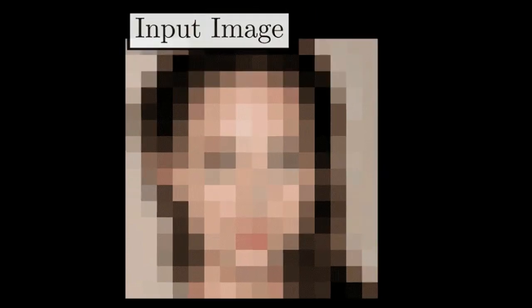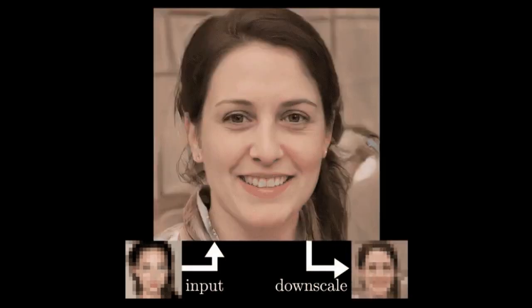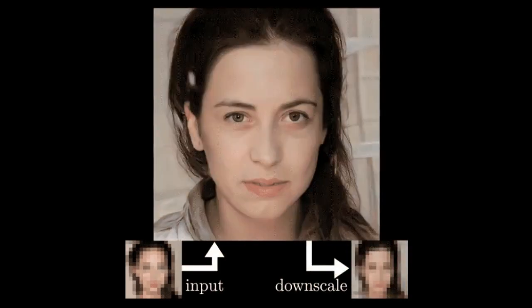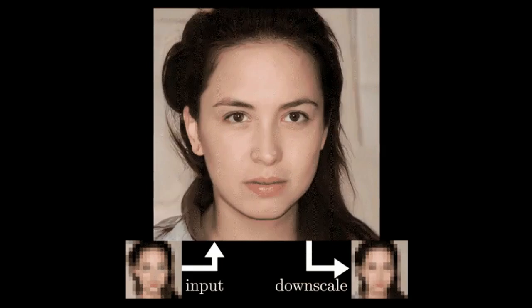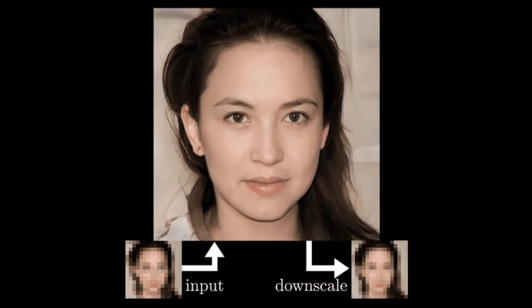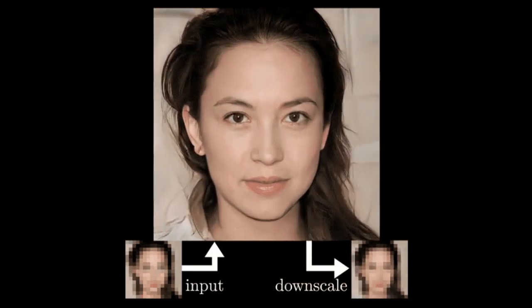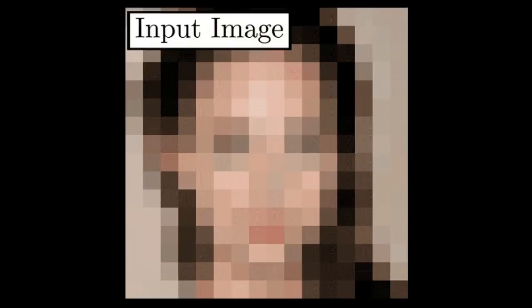PULSE can create realistic-looking images from noisy, poor-quality input that other methods can't. From a single blurred image of a face, it can generate any number of uncannily lifelike possibilities, each of which looks subtly like a different person.